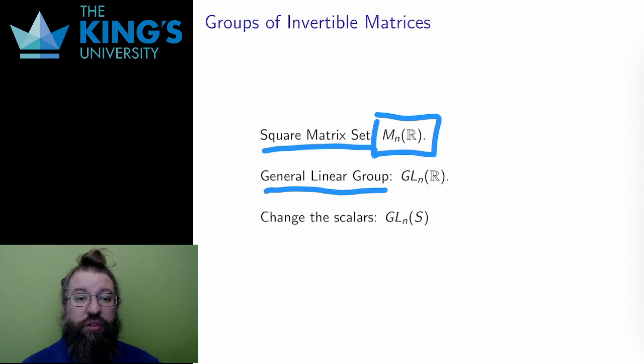The notation for this group of invertible matrices is GL_n(R). If I wanted to change the scalars to insist, for example, that the entries of the matrix have to be fractions or have to be integers, then I'd change the symbol in the brackets, writing S for whatever number set I want to use.